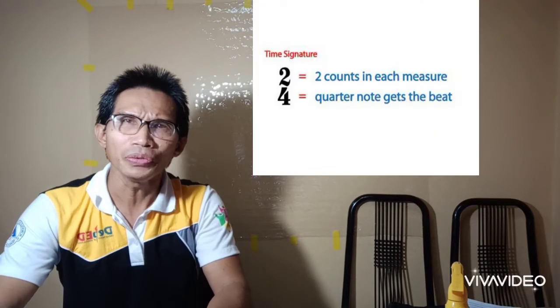Today, we are going to learn how to conduct another song with time signature 2-4. Let us first have a brief discussion about the time signature 2-4.